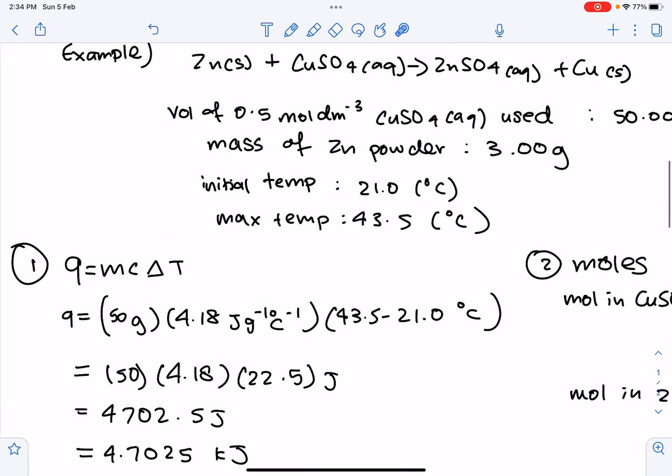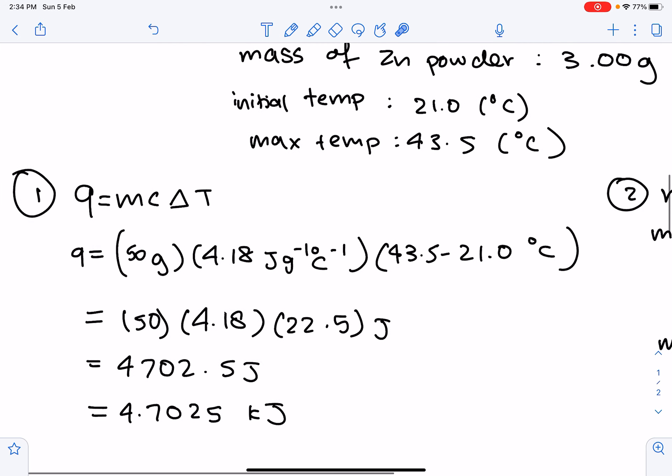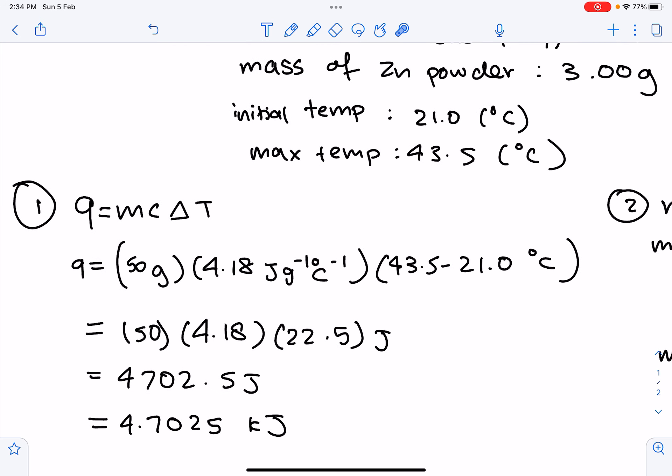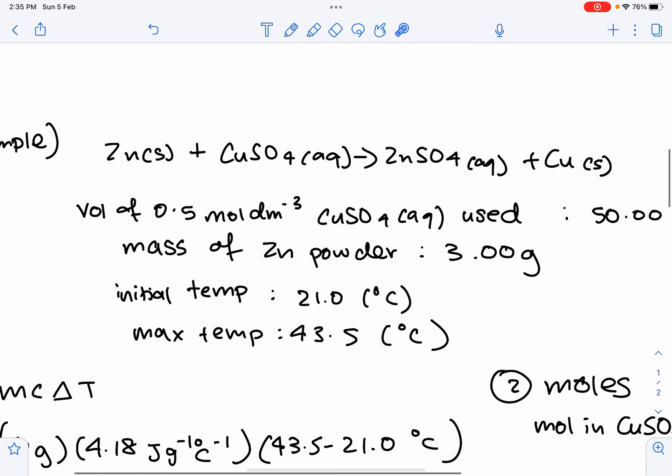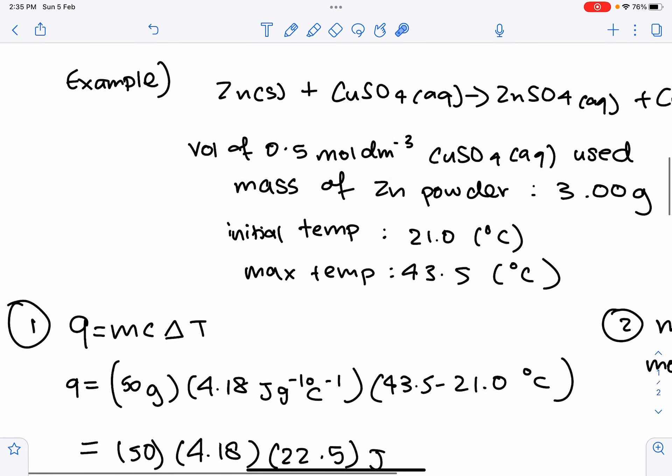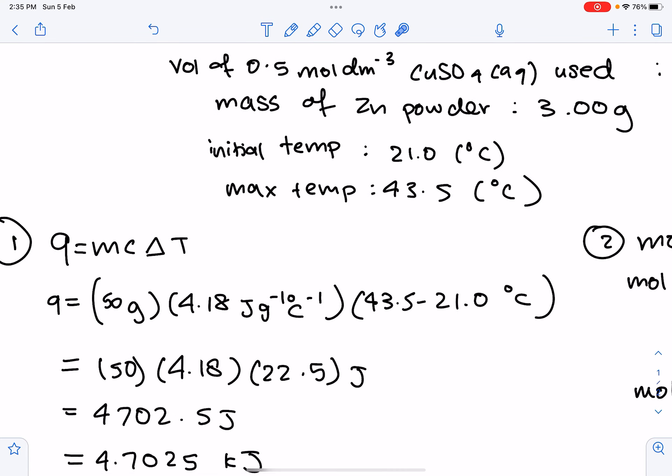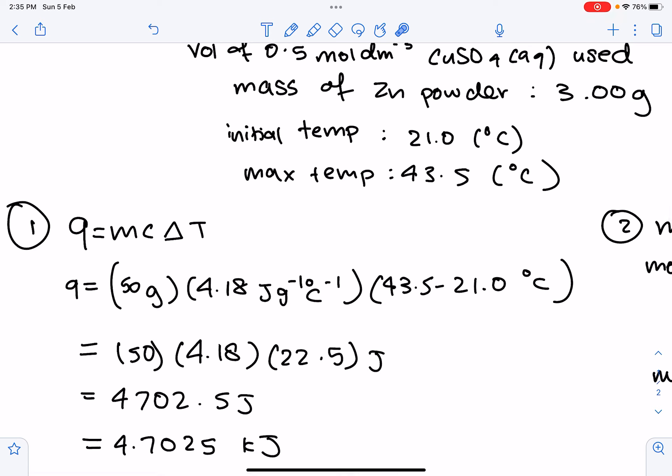So, the first step is going to be to calculate what Q is. So, we're going to plug in our values, Q equals mc delta T. So, m is going to be 50 grams. So, why don't we use 3 grams here? It's because we're looking at the mass of the solution. That's why we're using the 50. Then, we assume the specific heat capacity of water, which is 4.18 joules per grams per Celsius, degrees Celsius.